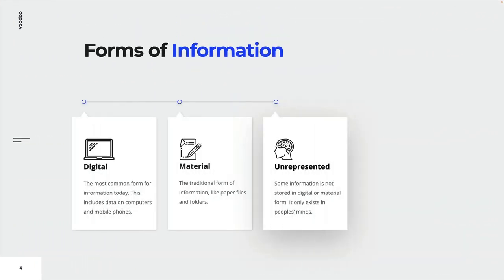Information can be stored in different forms. It can be stored in digital form, which is the most common form — for example, data files stored on a computer. A more traditional form is the material form, like paper files or letters. Unrepresented information describes information available in the form of knowledge of human beings. Note that unrepresented information can easily be lost in case of employees leaving their employer. Only information in digital and material form belongs to an organization.